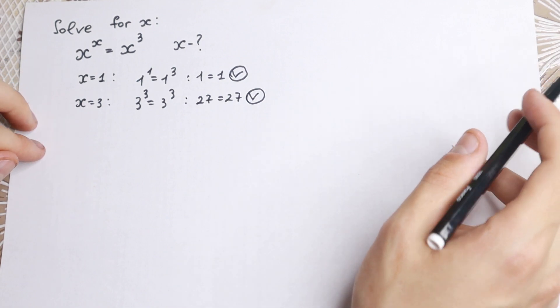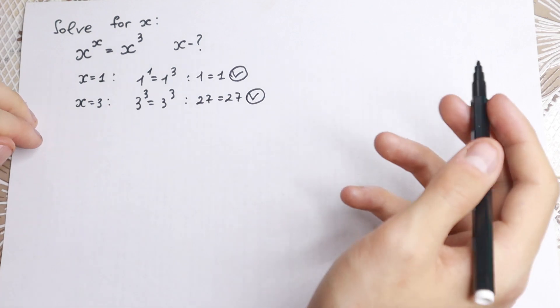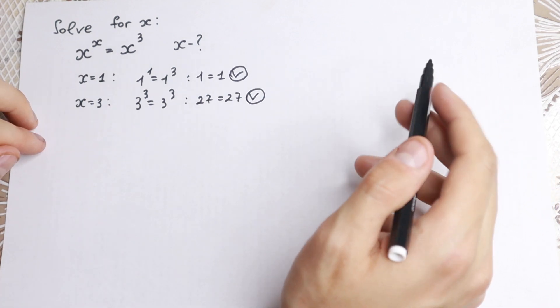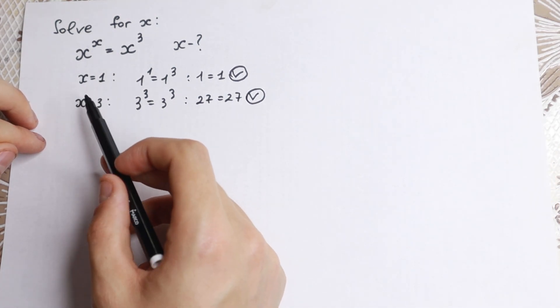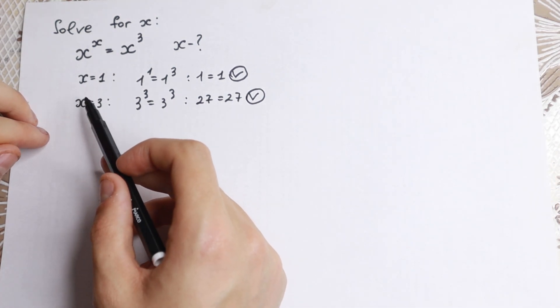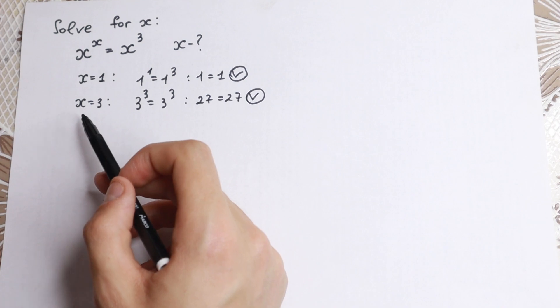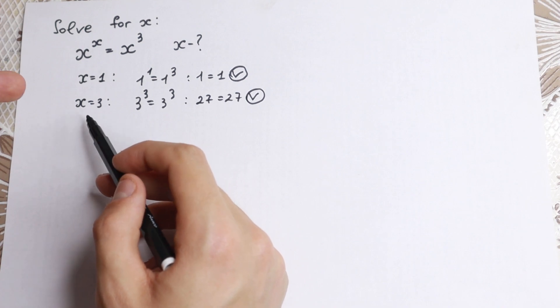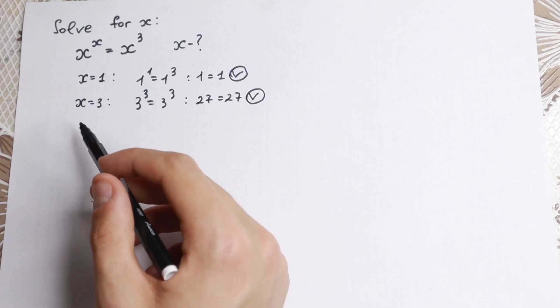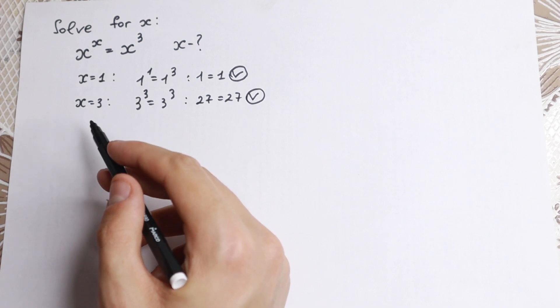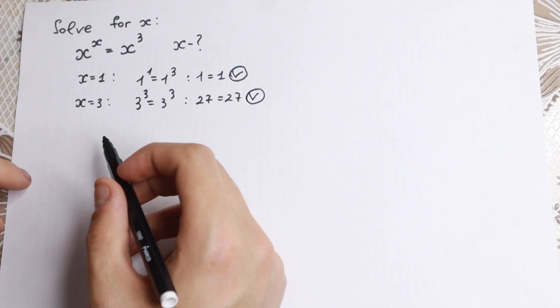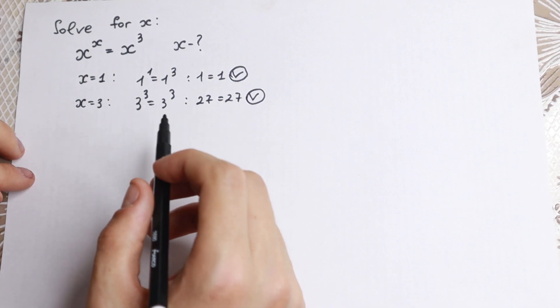But what about all roots? Maybe there are more roots. Inspection alone doesn't work here — this math is not just about inspection. We need proof that these are the only roots, or whether there are more. So let's try to solve it properly.